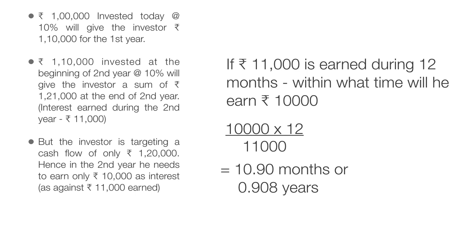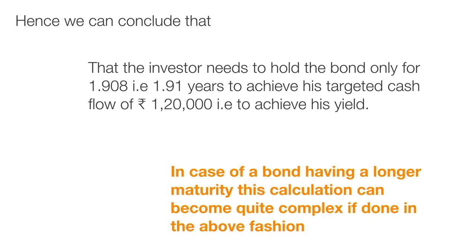We can do a simple calculation: in the second year, if 11,000 rupees is earned by holding the bond for 12 months, then within how much time will the investor earn 10,000 rupees? That is 10,000 × 12 ÷ 11,000, which gives us 10.90 months or 0.908 years. This implies that the investor needs to hold the bond for the entire first year — that's one year — and for the second year, hold it only for 10.90 months or 0.908 years. So the total holding period is only 1.908 years, or approximately 1.91 years, to achieve the targeted cash flow of 1 lakh 20,000.